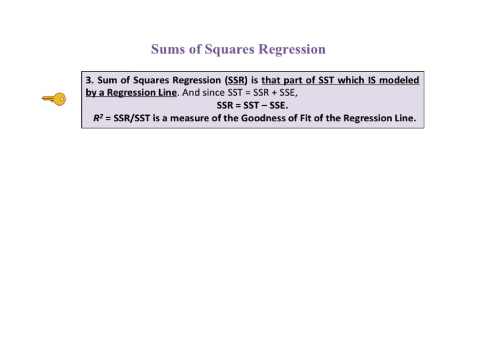Key to understanding number 3 says sum of squares regression, SSR, is that part of SST which is modeled by a regression line. And since SST equals SSR plus SSE, we find SSR by subtracting SST minus SSE. It goes on to say that R squared which equals SSR divided by SST is a measure of the goodness of fit of the regression line.